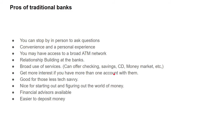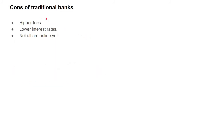You also get more interest if you have more than one account with a traditional bank, but keep in mind the interest rate still isn't great. For example, at one of my banks, if you have both a checking and savings account beyond a certain amount, you get double the interest — but double of 0.01% is 0.02%, which is still not very good compared to online banks. The cons are lower interest rates, generally higher fees — though they may waive fees if you keep a certain amount in the bank. And not all traditional banks are online yet.